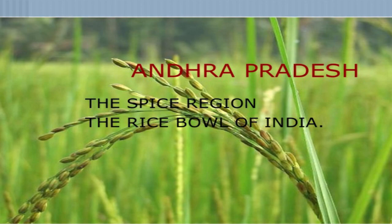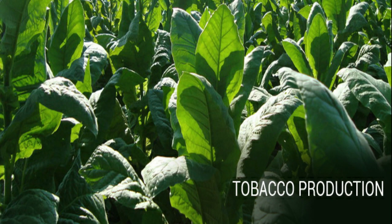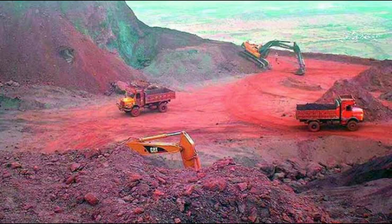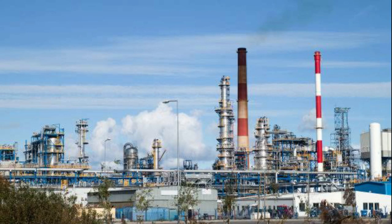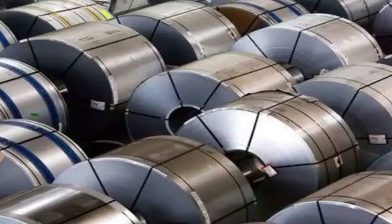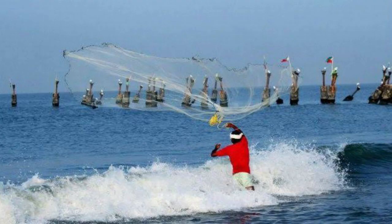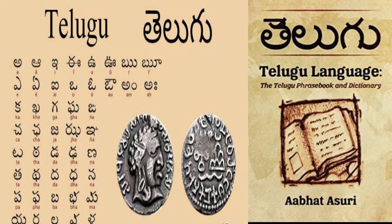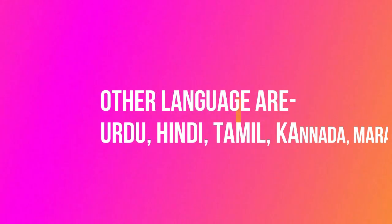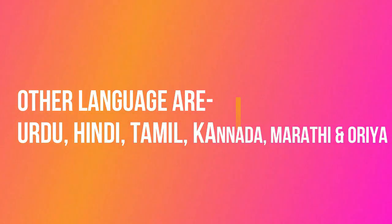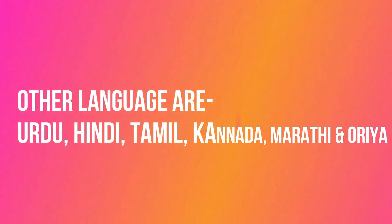Andhra Pradesh is the largest producer of tobacco. Mining is another important industry. It has an oil refinery and an iron and steel plant. Fishing is another important economic activity. Telugu is the official and most widely spoken language. Other languages spoken here are Urdu, Hindi, Tamil, Kannada, Marathi, and Odia.